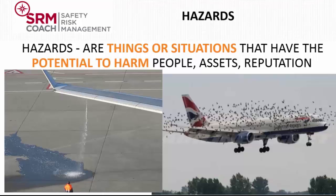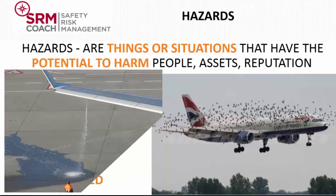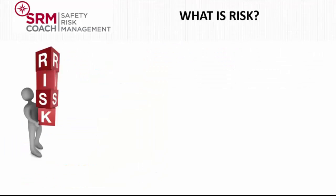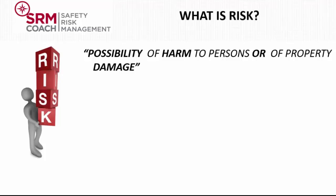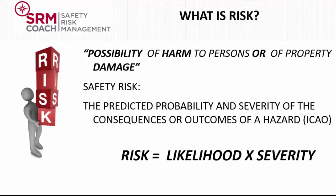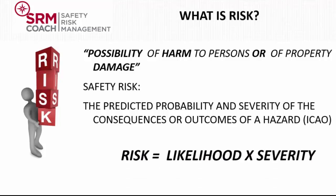A hazard is something to be risk assessed. So now we can define what risk is. From the definition of safety we get the definition of risk: risk is the possibility that harm or damage can happen. There are two dimensions of risk. First, the likelihood that something bad can happen. Second, the severity — if something bad happens, how bad will it be? This is where the risk formula comes from: likelihood times severity.